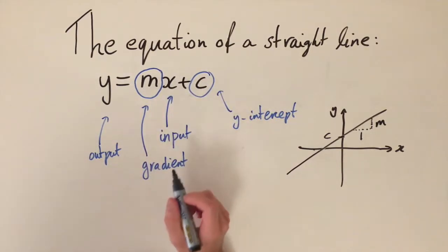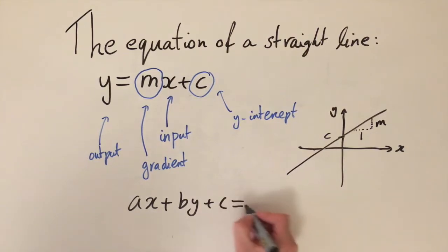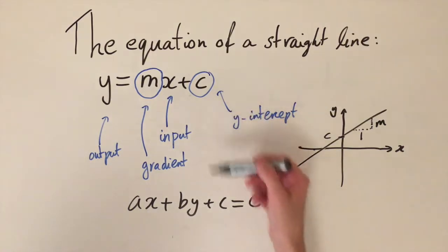And I also want to draw attention to another form that we can write this equation in. We can also write ax plus by plus c is equal to 0. Now this is an equivalent expression and we can rearrange to get between these two expressions. Typically a, b, and c would be integers, so whole numbers, and it's just an alternative way of writing the equation of a straight line.